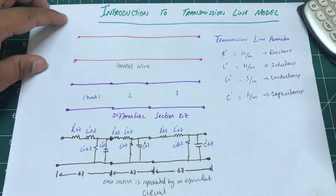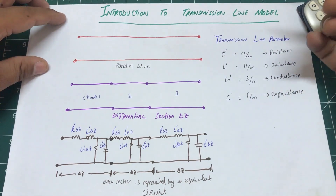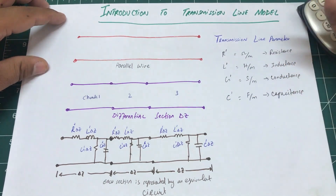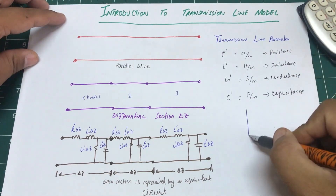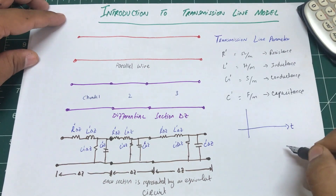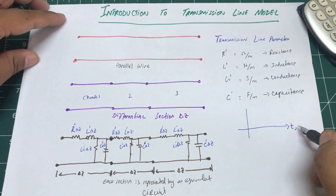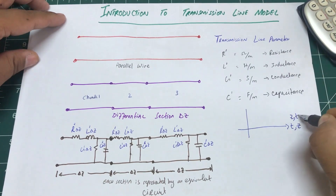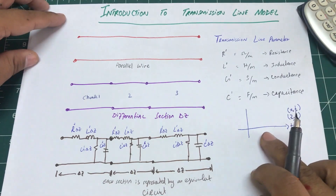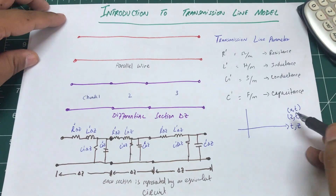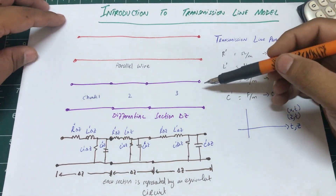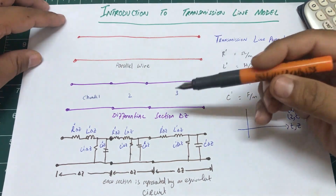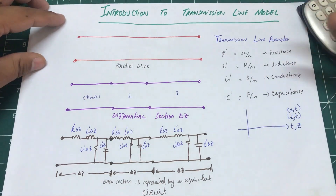Delta z shows we're looking at this transmission line in terms of length. We can also visualize the line in terms of time — our horizontal axis can be with respect to time or with respect to length. If the horizontal axis is with respect to time, it becomes period; in terms of z, it becomes wavelength. In literature this is written as z comma t, or sometimes x comma t. Since we're looking at these transmission lines with respect to length, we'll use delta z.